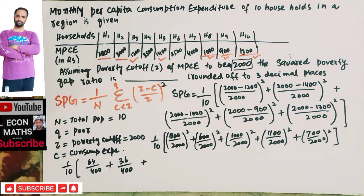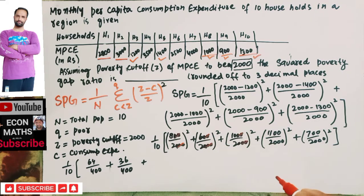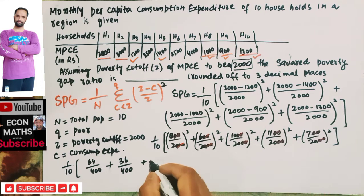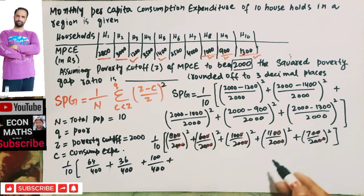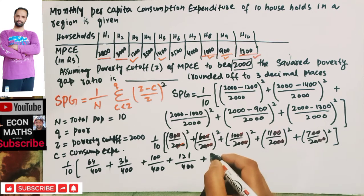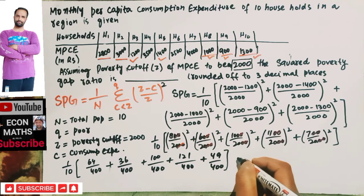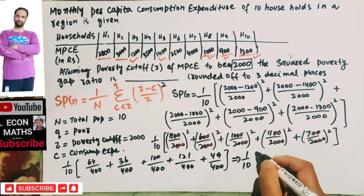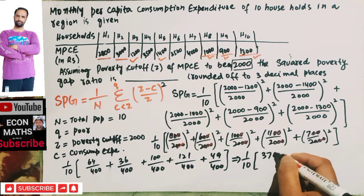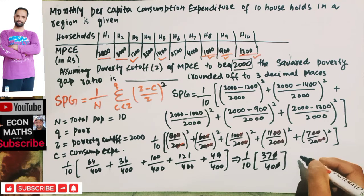Adding the numerators: 64 plus 36 plus 100 plus 121 plus 49 comes out to 370. So we have (1/10) times (370/400), which simplifies to 37/400.